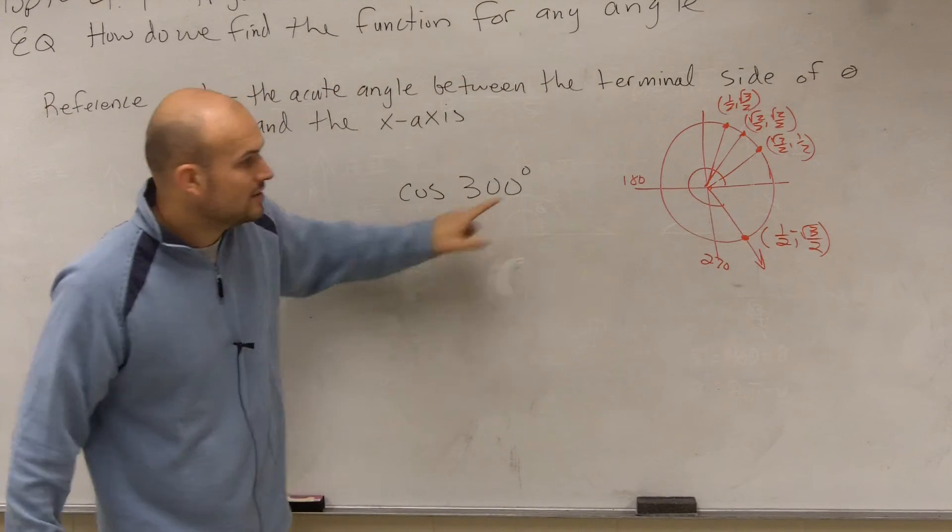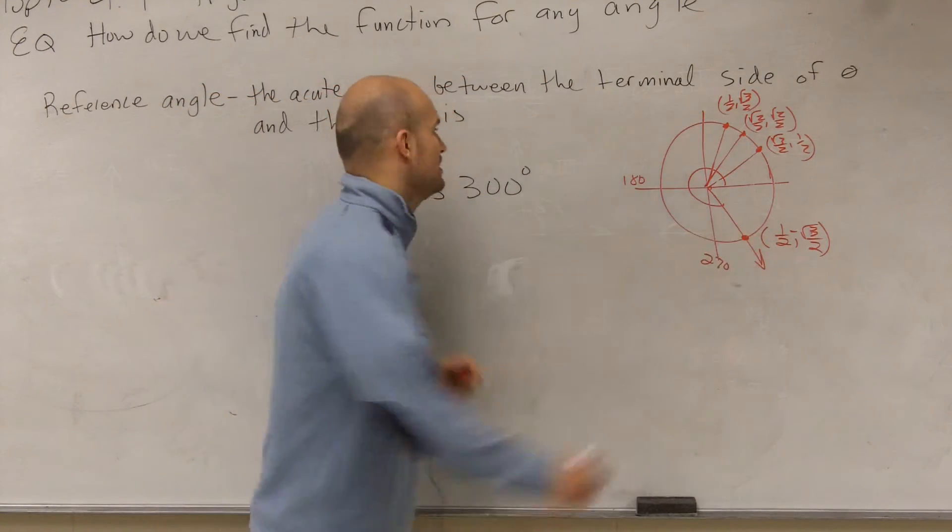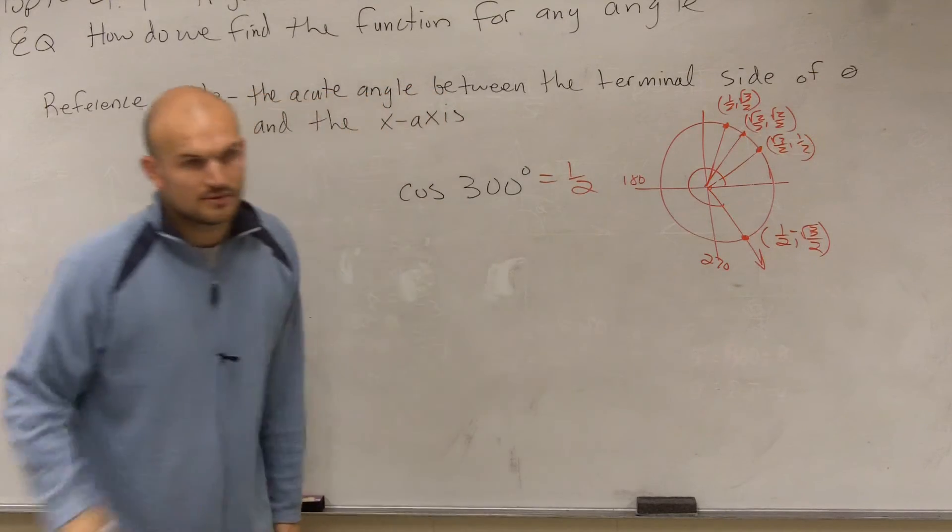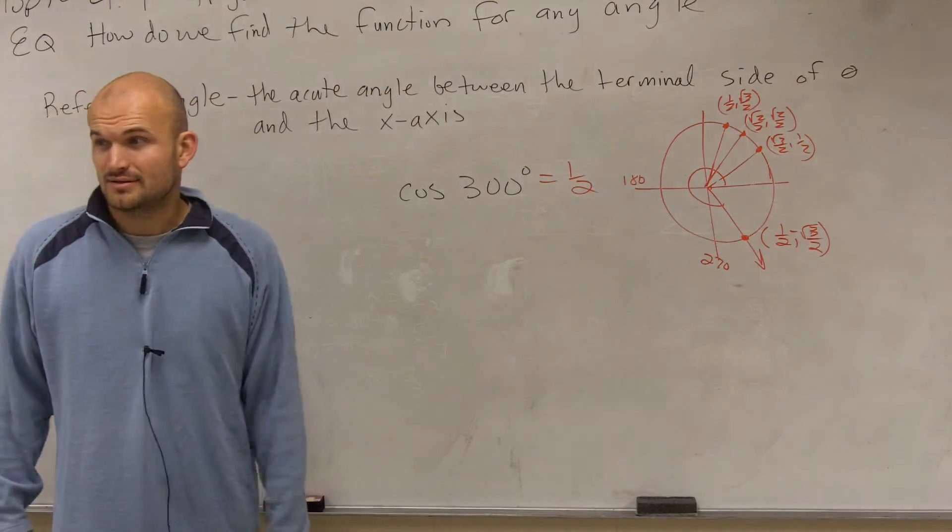So to find the cosine was the x value of that point, which was equal to 1 half. And that was kind of a lot of work. It really was.